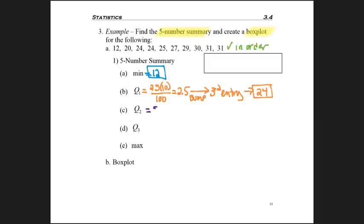And I repeat this process. For Q2, I want 50% of the way through a 10 item list, which would be the fifth number. But remember, when you get a whole number, I need to average that location and the next location. So I need to go find the fifth and sixth entry and average those two values. So 25 and 27, you might not even need to do the math. You might just be able to see that 26 was the average.